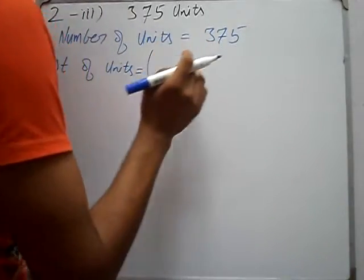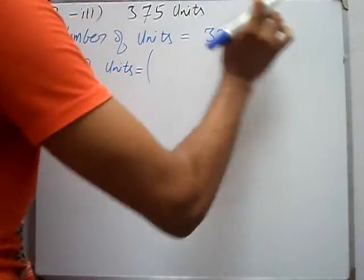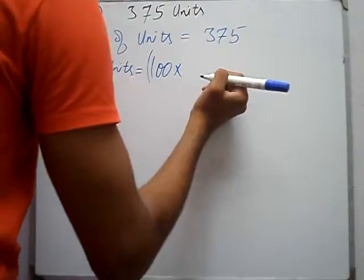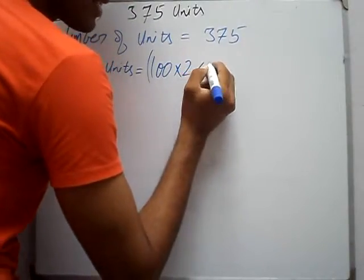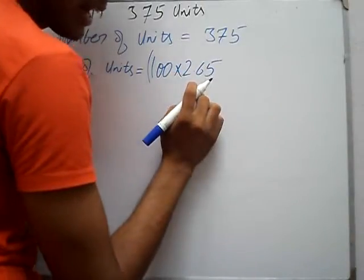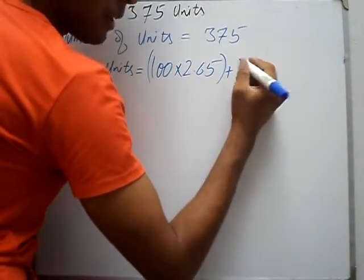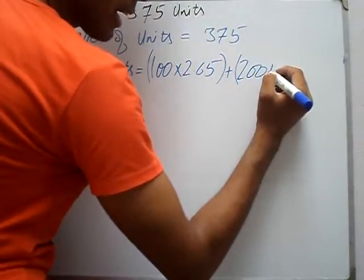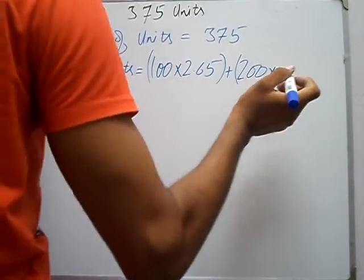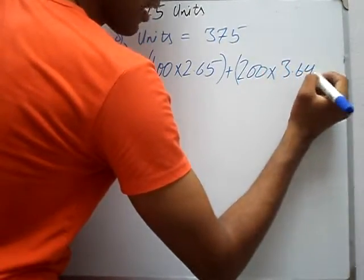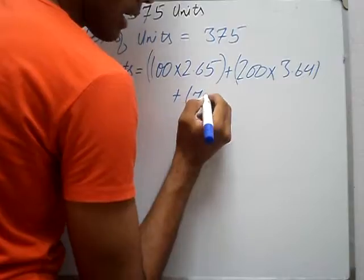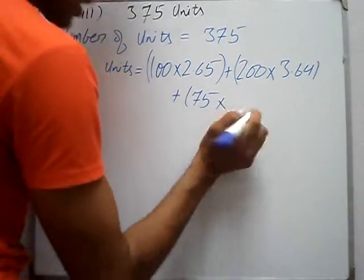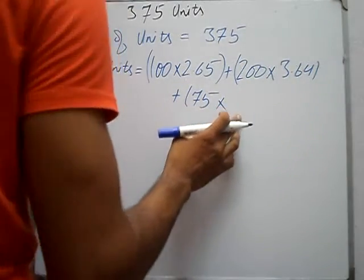First 100 units: 100 units multiplied by rate 2.65 equals 265. Next 200 units multiplied by rate 3.64. Last 75 units: 100 plus 200 equals 300, and 375 total — finding cost of units across all slabs.